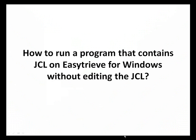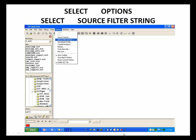How to run a program that contains JCL on EasyTree for Windows without editing the JCL. This can be accomplished by using source filter strings. From the toolbar, select Options and then select Source Filter String.